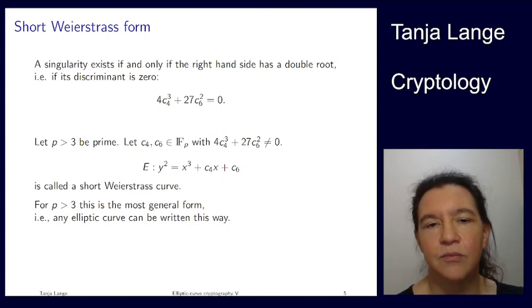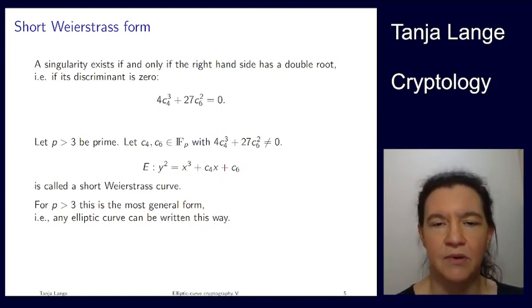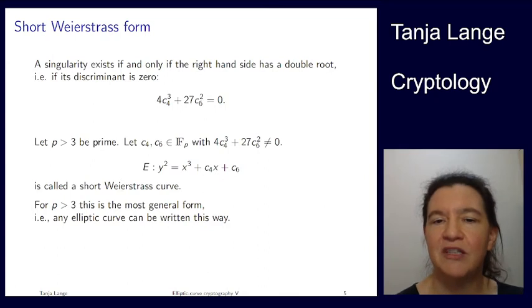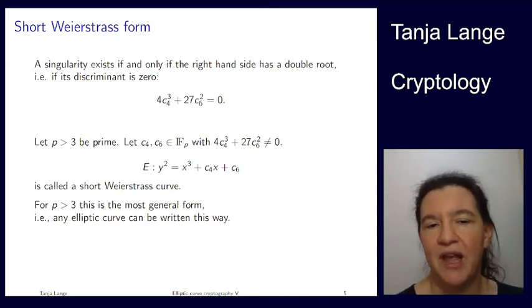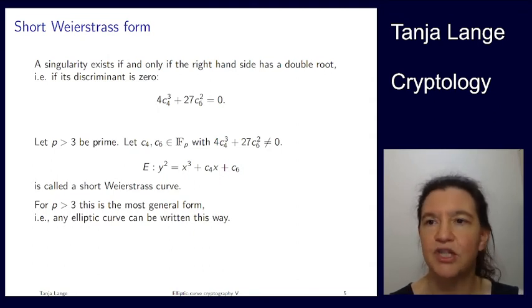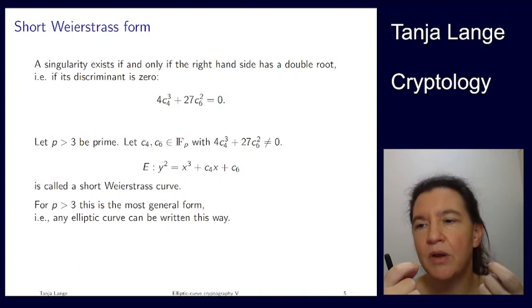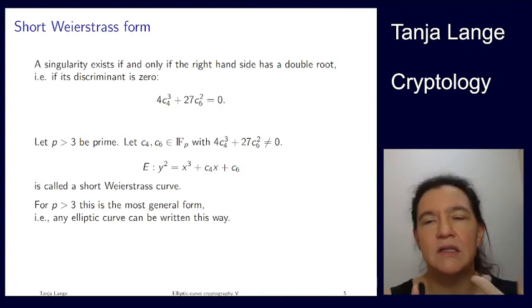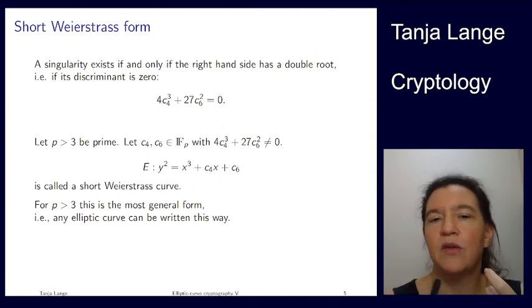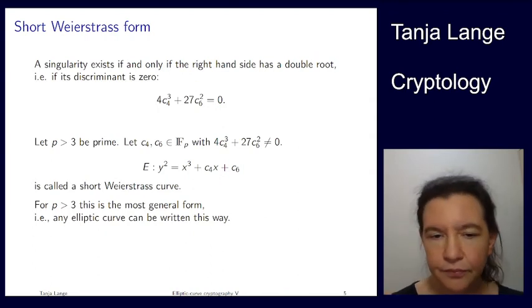So a short Weierstrass curve is an elliptic curve and has this condition on the terms. Other than that, they're pretty free. For p large and not 3 we have done only transformations which are invertible. So it's the most general form. Any elliptic curve in that case can be written this way. So we have, well, it seems two parameters, but they're sort of dependent. It's like with Edwards curves.